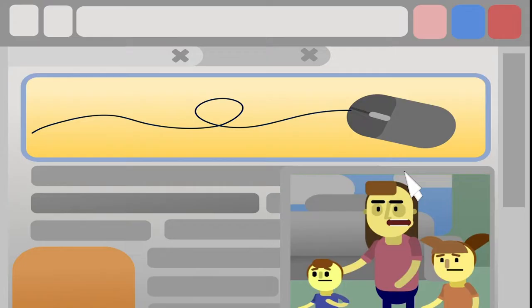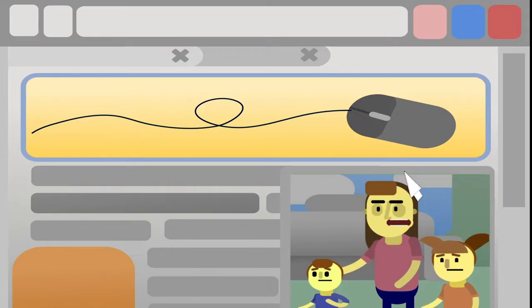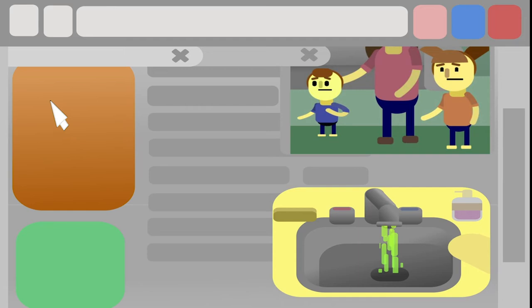While it may be less expensive to produce and distribute journalism online, small digital news outlets can still fall prey to the powerful. Labor-intensive investigative journalism is overshadowed by the quick story, the click bait.